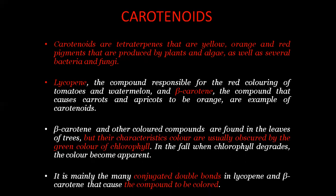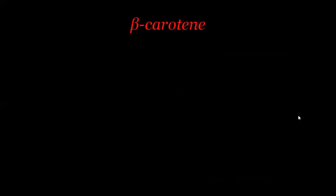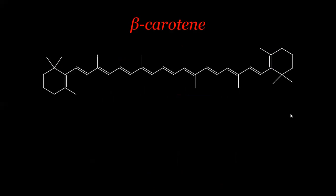Carotenoids such as lycopene and beta-carotene have many conjugated double bonds, and it is this conjugation that causes these compounds to be highly colored. If you look at the structure of beta-carotene, you can see the extensive conjugation — it is a highly conjugated system which makes it very colored.